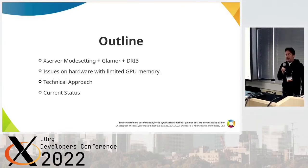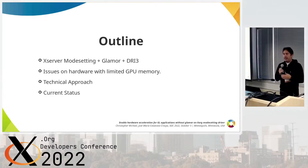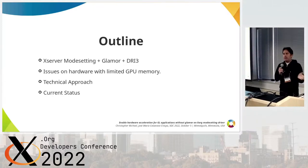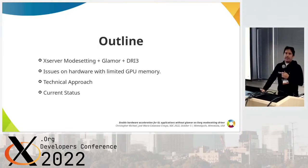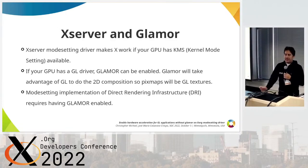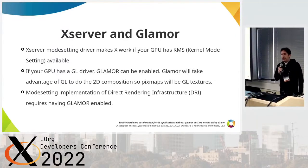We analyze the issues we have on hardware with limited GPU memory — the case of Raspberry Pi 1 to 3 — explain the technical approach we tried in order to solve that, and the current status of this work.